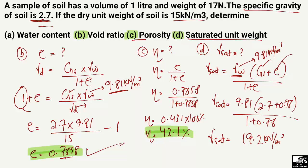So that is the saturated unit weight of this soil sample, with specific gravity 2.7 and void ratio 0.76. If you have any further questions, put them in the comment section and I will make a separate video. I hope you understood — don't forget to subscribe for daily civil engineering videos. Thank you for watching.